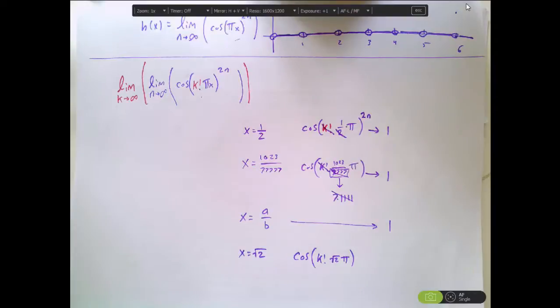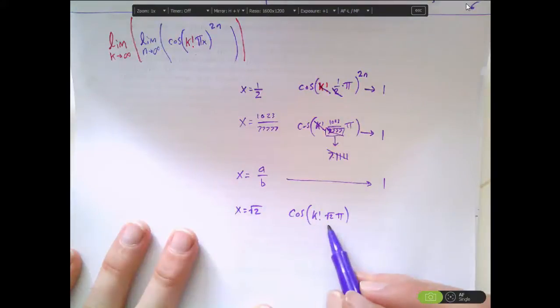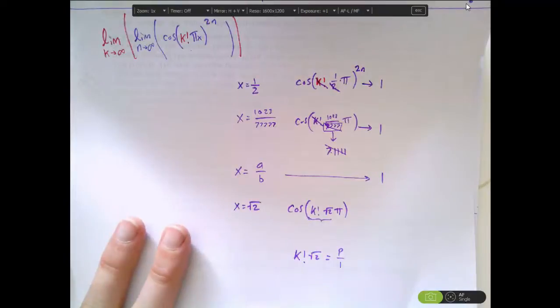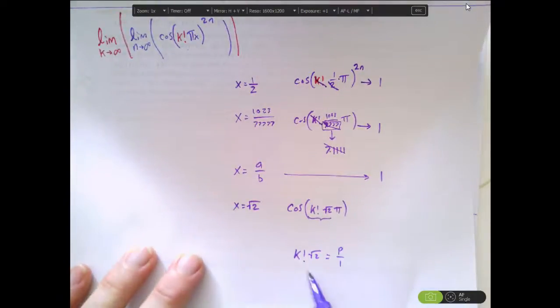I know that this cosine will take on the value 1 if the inside here is ever a positive integer multiple of π. Is that ever true? Can I find some value for k, and if I multiply that by the square root of 2, it's going to somehow turn that into a positive integer? Is that possible? Let's assume for a second that k factorial times the square root of 2 can eventually give you a positive integer. That's like saying k factorial times √2 eventually gives you a positive integer, which I'll call p, and I'll write in the form p/1, which is a rational number.